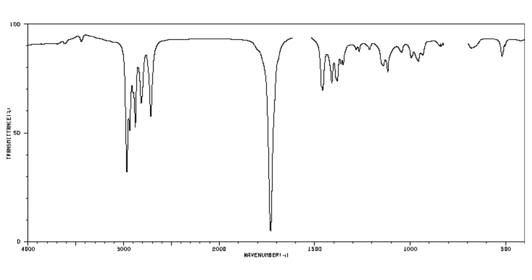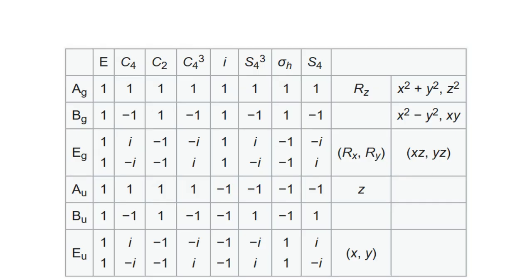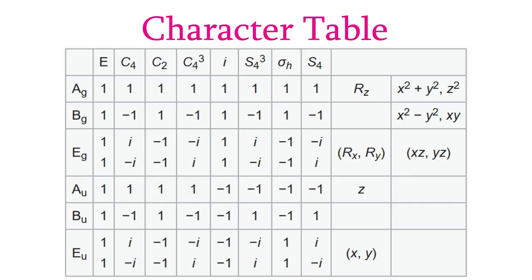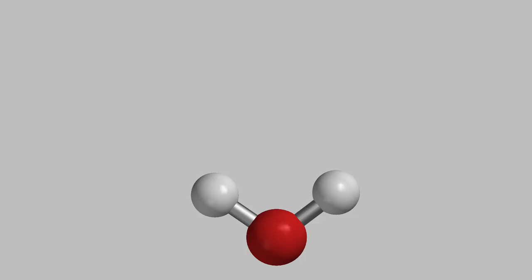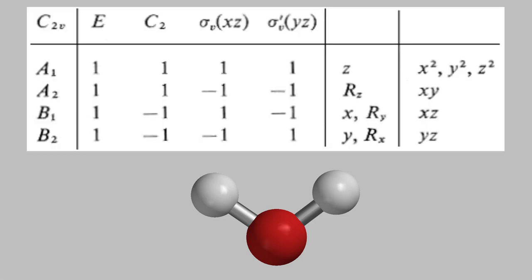It turns out that we can summarize a lot of the symmetry information about point groups in a kind of chart called a character table. There are character tables for a few dozen different point groups in our textbook, and these can be a bit difficult to interpret, so let's talk about them for a few minutes. For example, let's think about water. In the last video, we saw that water belongs to the point group C2V. Let's look at the character table for that point group.